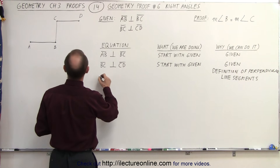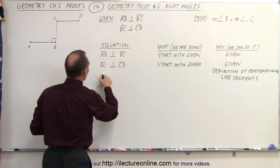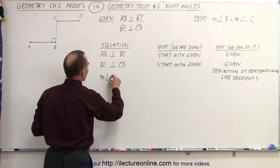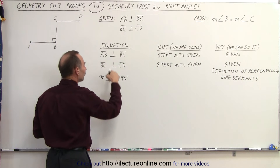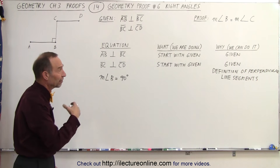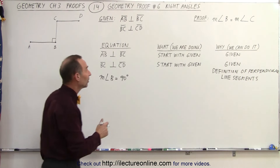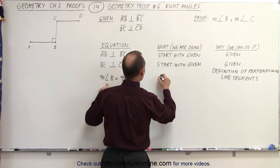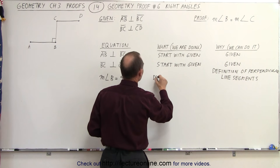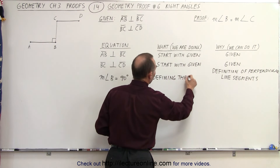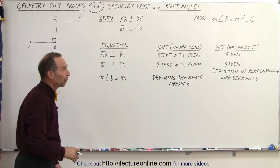We can then conclude that the measure of angle B, which is right here, must equal 90 degrees, because the two line segments that meet there to form that angle are perpendicular to one another. By the definition of perpendicular line segments, those line segments make an angle of 90 degrees. We are defining the angle measure using the definition of perpendicular line segments.